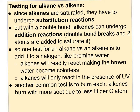Testing for alkanes versus alkenes: alkanes are saturated and undergo substitution reactions, but alkenes have a double bond and undergo addition reactions — the double bond opens up and an atom is added to each carbon. One test is to add a halogen like bromine water, which is dark brown. Alkenes will readily react with bromine water and you'll see it become colorless as the bromine attaches to the alkene forming a dihalogen alkane, but alkanes won't react unless UV light is present. Another test is based on sootiness: alkenes burn with more soot due to their hydrogen-to-carbon ratio, whereas alkanes burn much cleaner.